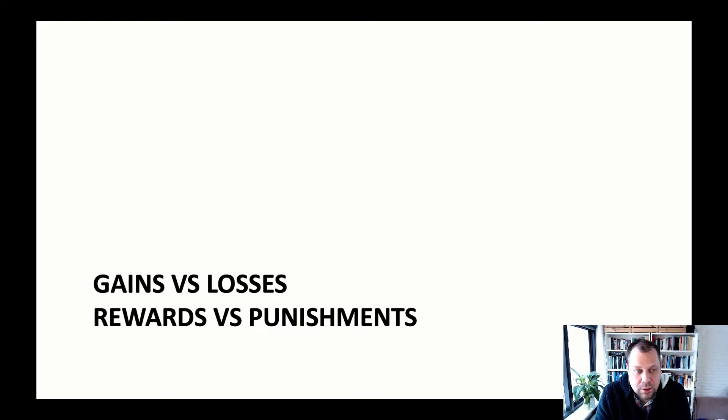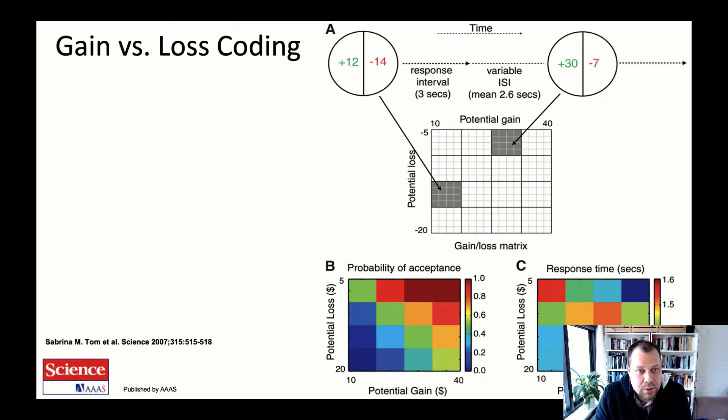One thing that may have become clear in the previous parts is that the brain seems to differentiate somewhat between gains and losses. That's a question we're going to ask in a number of studies in the next part of the video lectures. A very famous paper that started this question—how are gains encoded versus losses encoded—is this one by Sabrina Tom and Russ Poldreck and colleagues, which was published in Science in 2007.